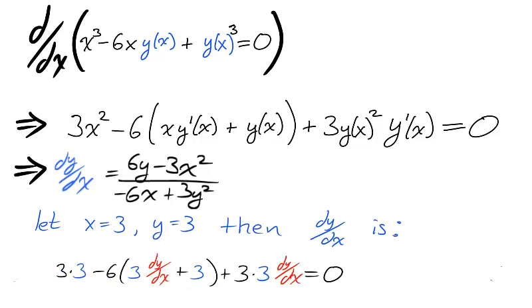We can calculate dy over dx at the point by plugging x equals 3, y equals 3 into our equation, which implicitly describes the derivative. Take a second to solve for dy dx. Your answer is negative 1.